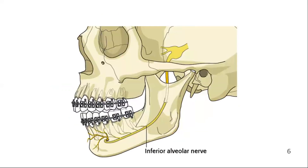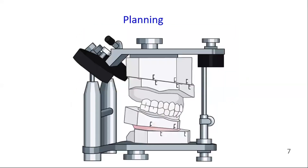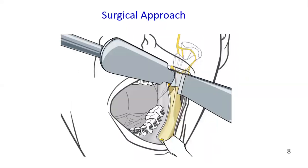The obvious problem for this procedure is the close proximity of the osteotomy lines and the neurovascular canal. Care should be taken not to damage the inferior alveolar nerve during this procedure. Do a proper planning for this orthognathic surgical procedure. For this procedure, the transoral approach to the mandibular angle and the transoral approach to the lateral mandibular body is used.